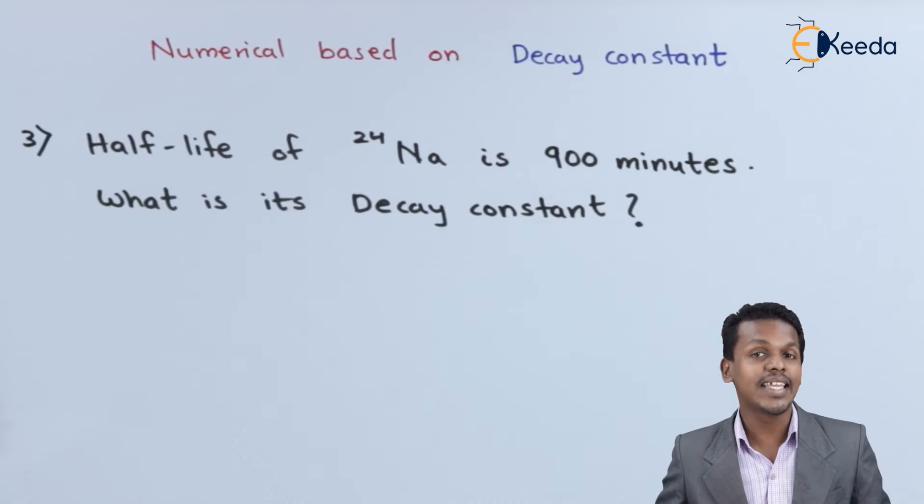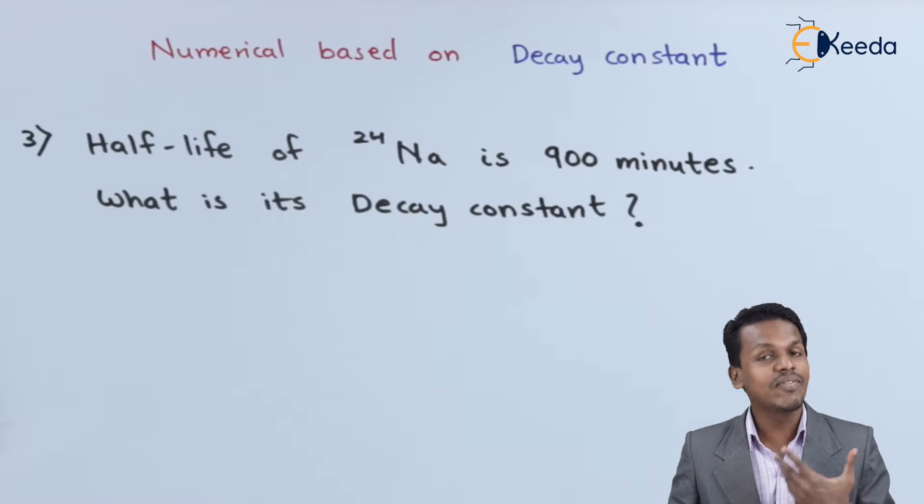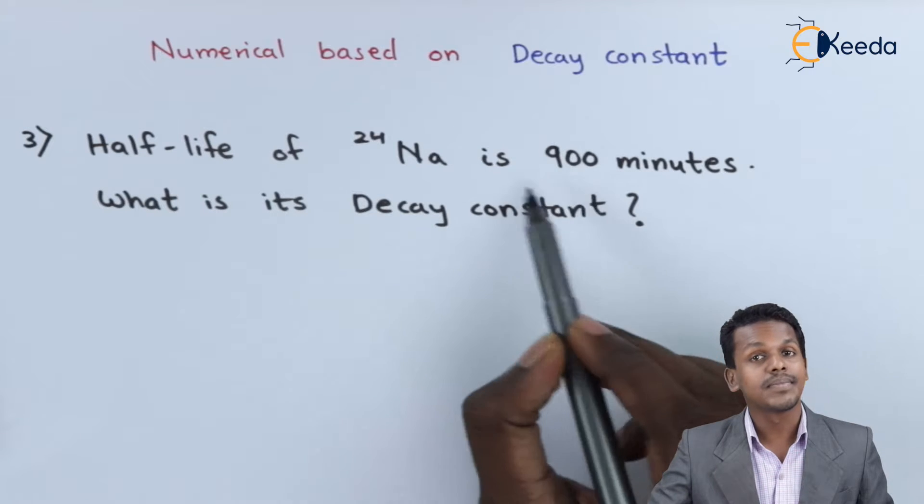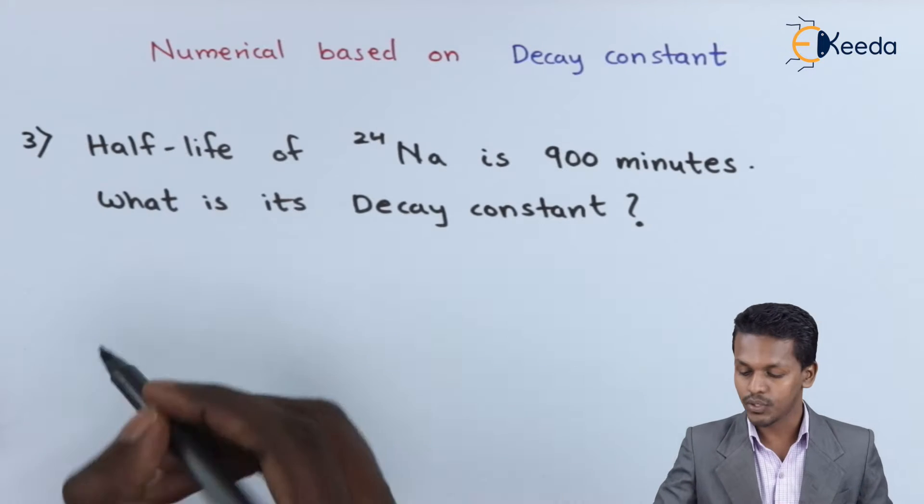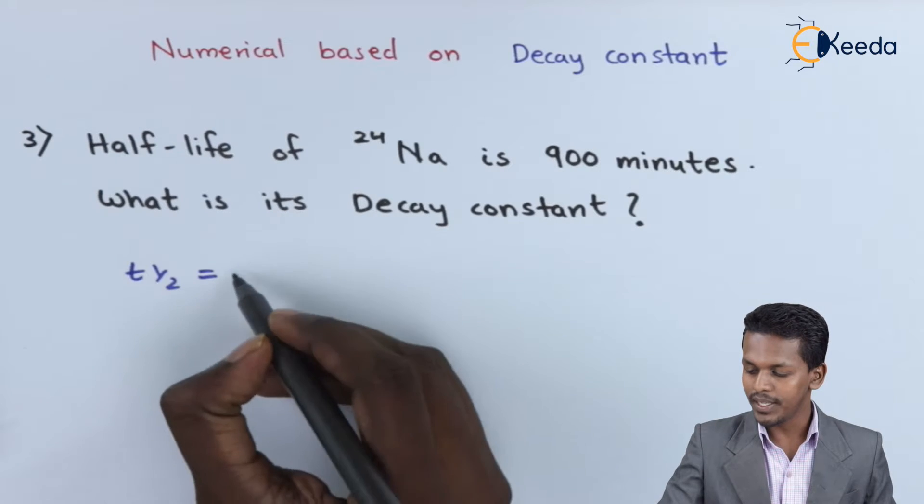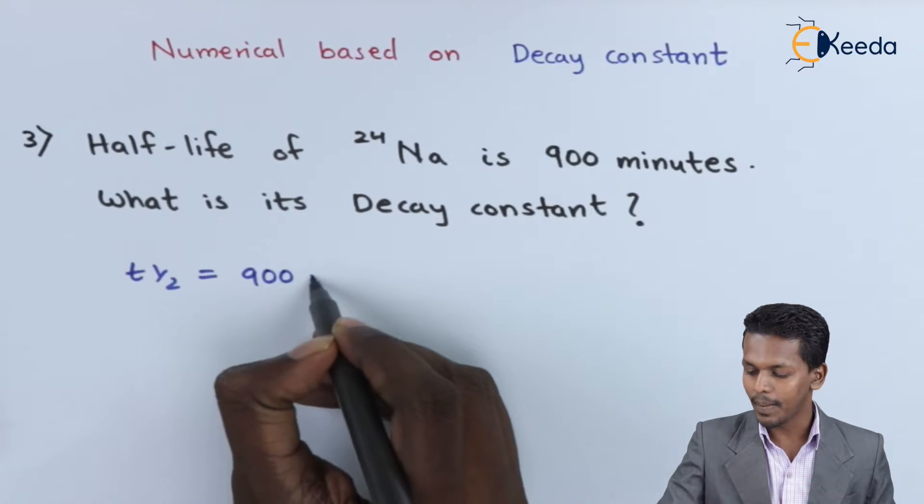What is its decay constant? Here only one particular data has been given to us, and that is the T half, the half-life. We can write this as T½ = 900 minutes.